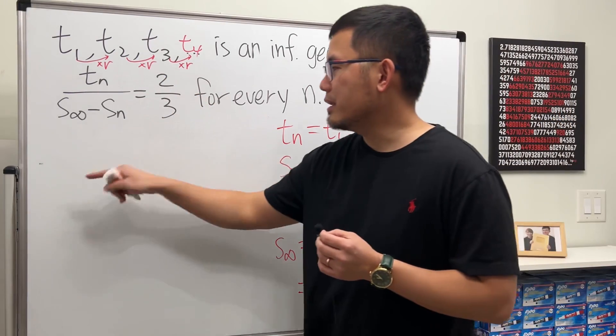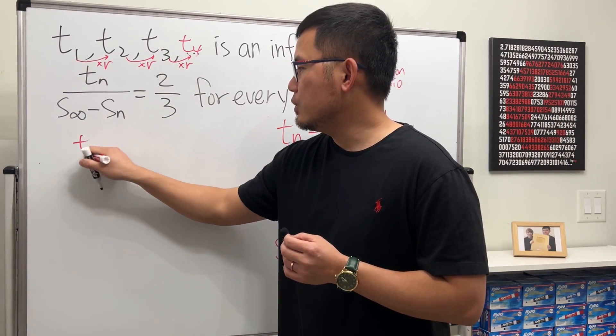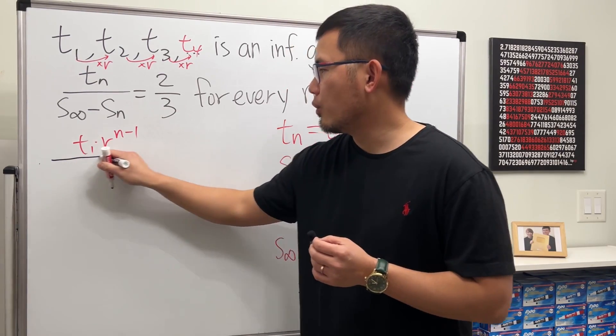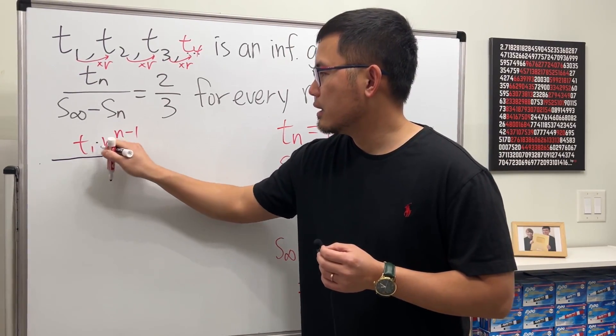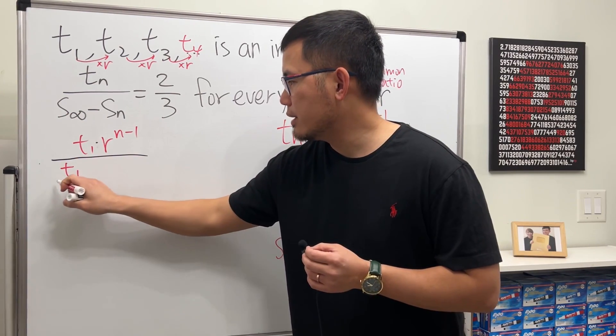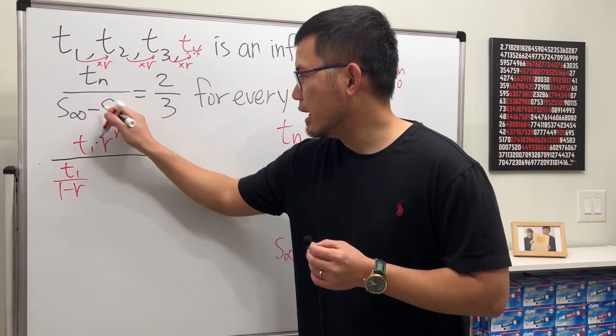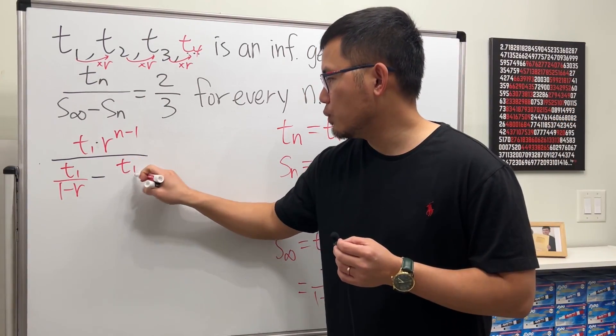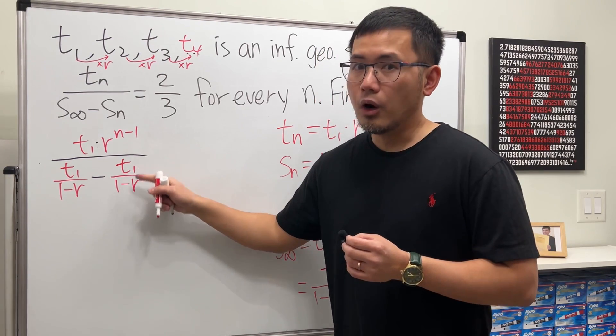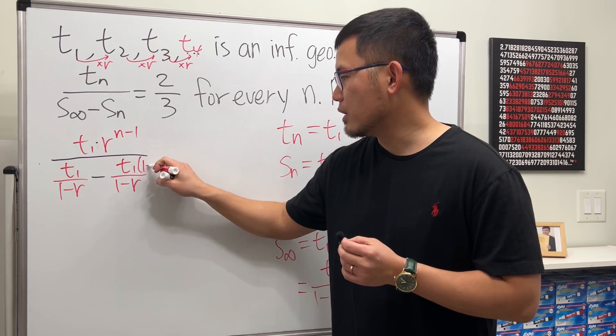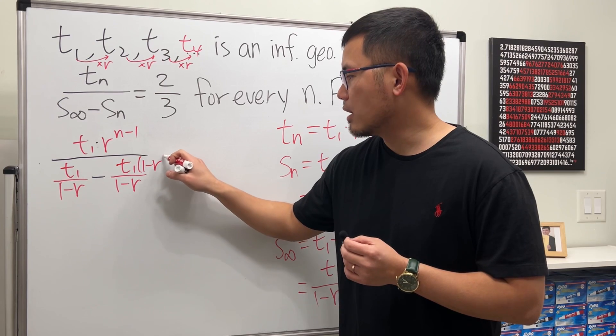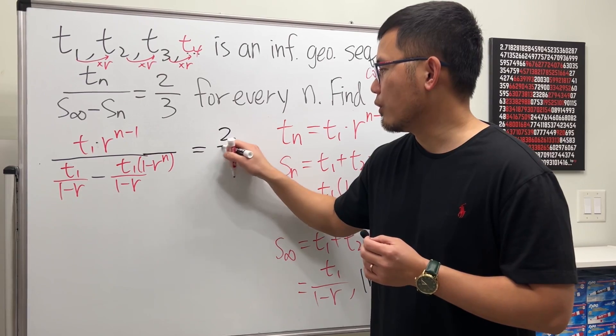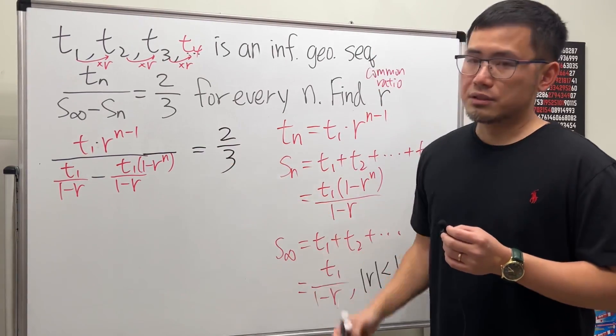I'll put this right here. Here, we get t1 times r to the n minus 1 over s infinity is t1 over 1 minus r, and then minus sn is that. So we have t1 over 1 minus r. Almost the same, but then don't forget here we have to do the 1 minus r to the n. And of course, we are going to make this equal to 2 over 3. And now, we just have to solve that equation.